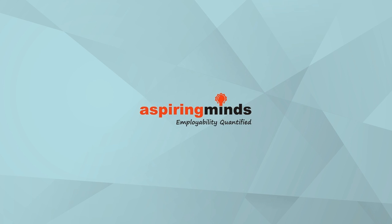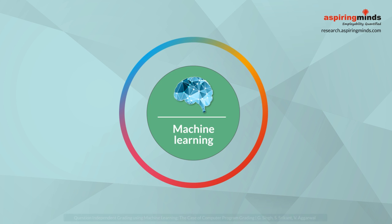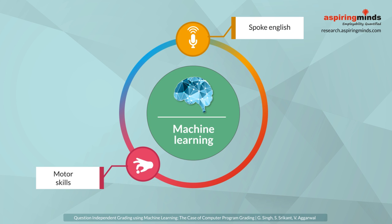Hi. At Aspiring Minds Research Labs, we use machine learning to grade open responses. We use the power of data to grade spoken English, motor skills, or programs.